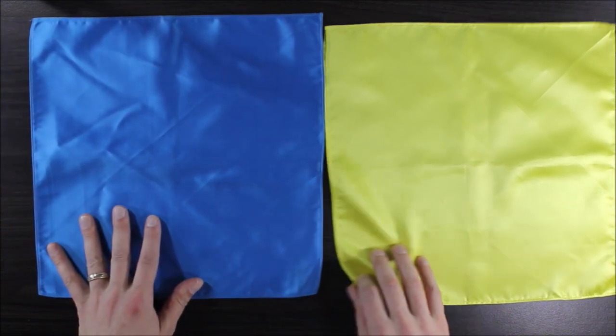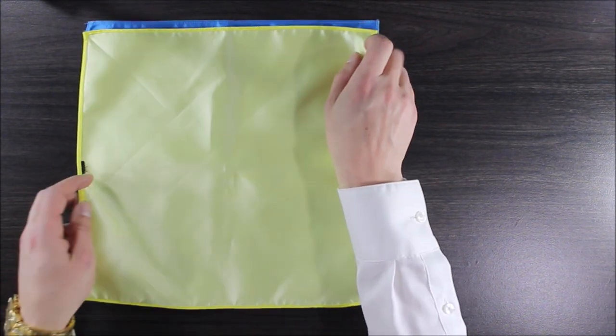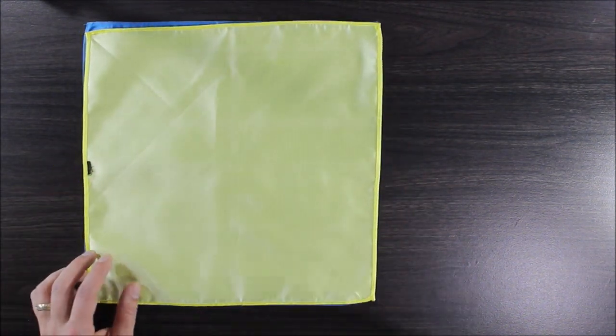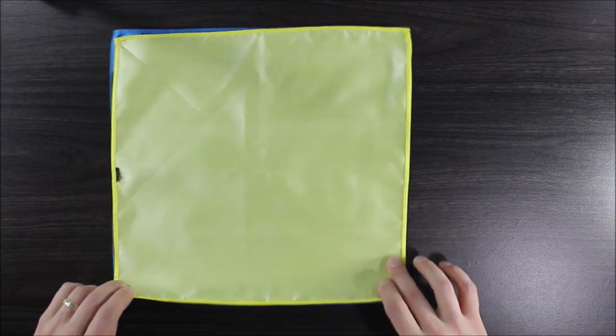Take the yellow and overlap it on top of the blue. I'm going to flip mine over because I've got the unfinished side up, and by the time I fold it, the finished side will show where I want it to be.